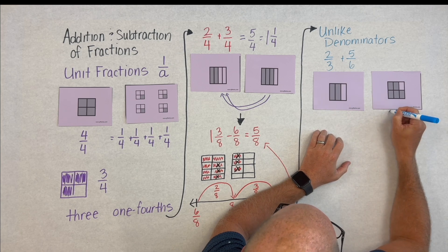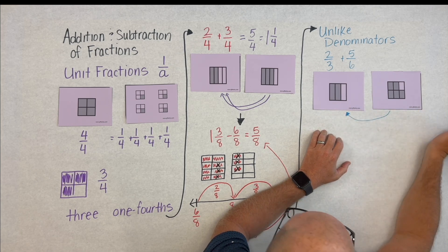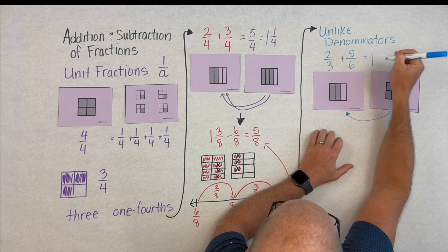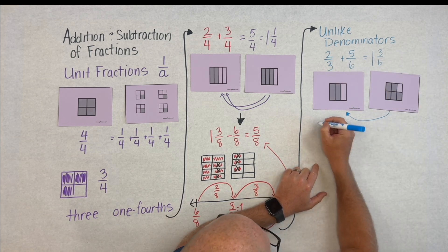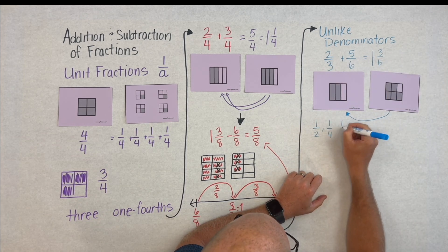Here we can take two-sixths which is equivalent to one-third and we can fill up our two-thirds, and we're left with one and three-sixths.